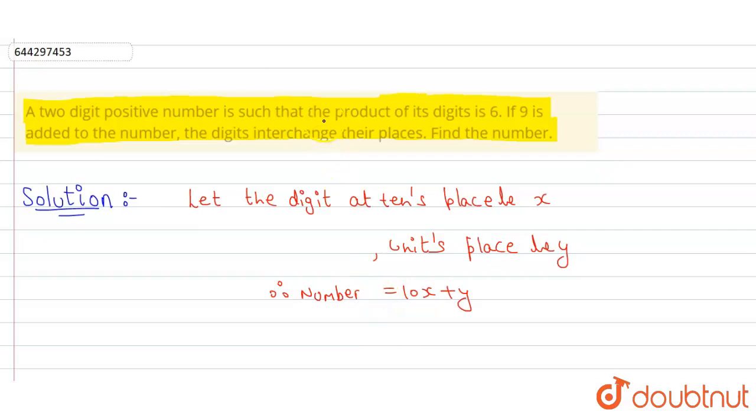Therefore, the number will be 10x plus y. It is given that the product of the digits is 6. That means x times y is 6, so from here y will be 6 upon x. Let this be the first equation.